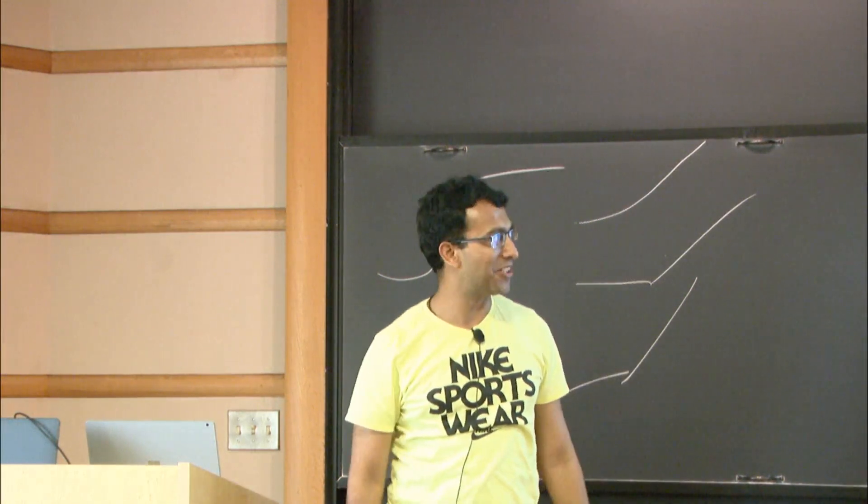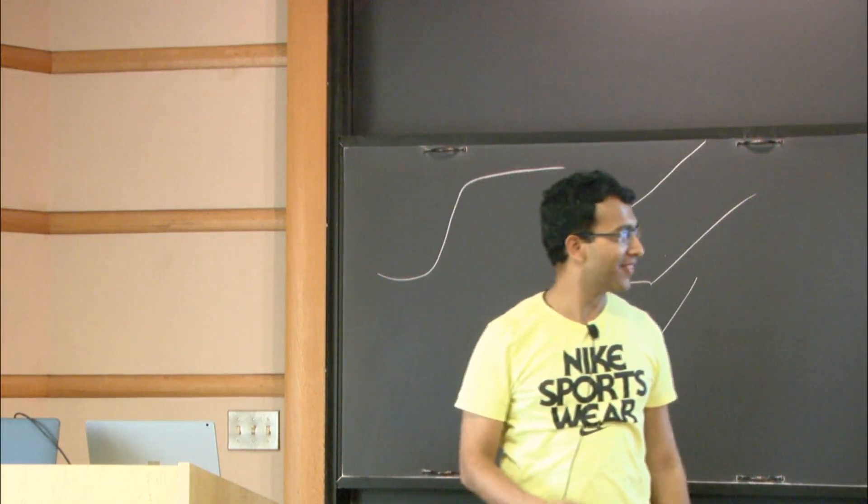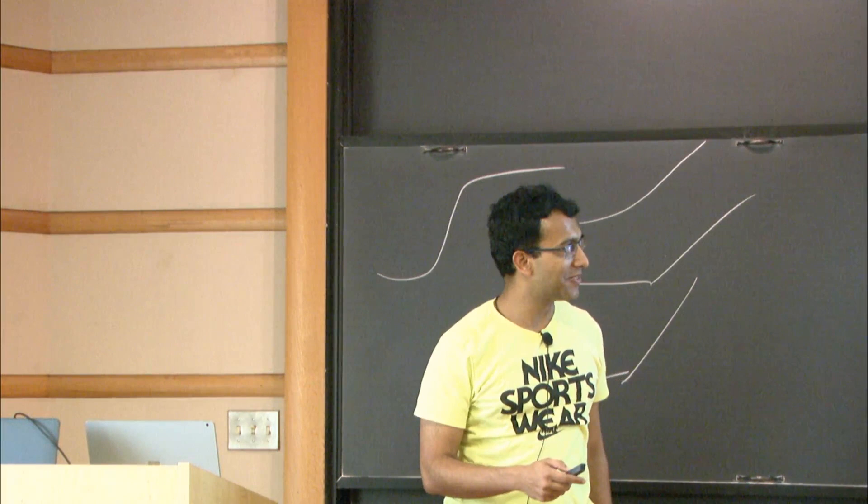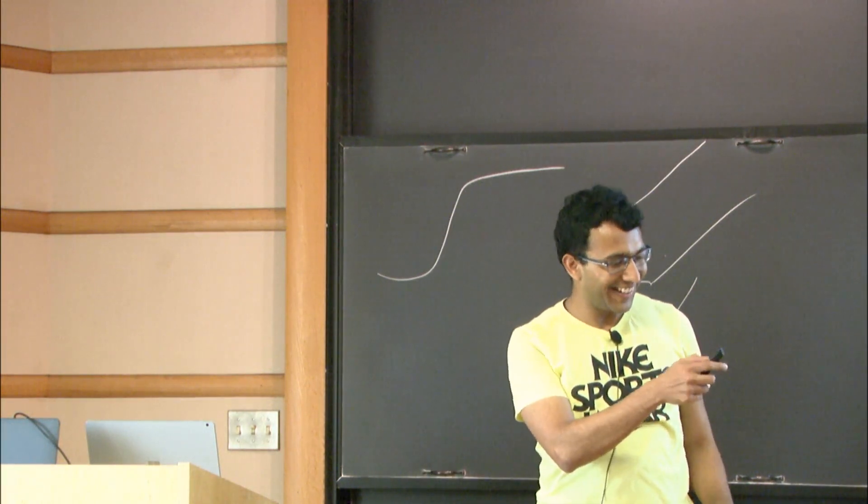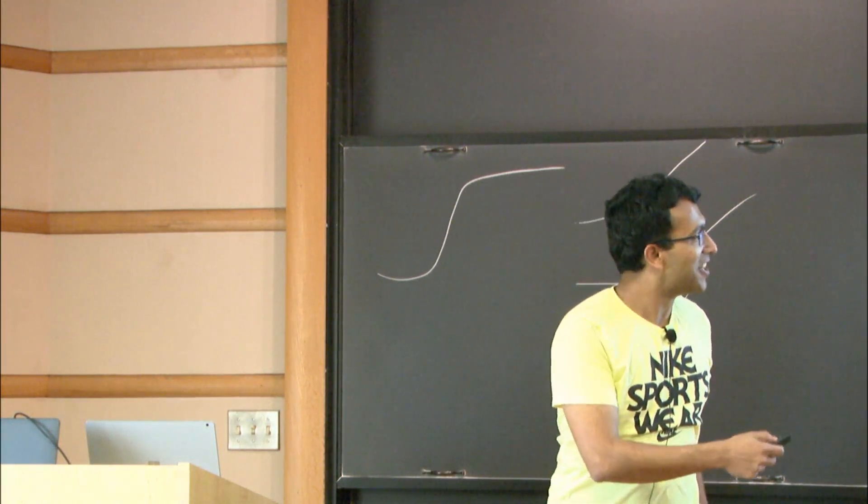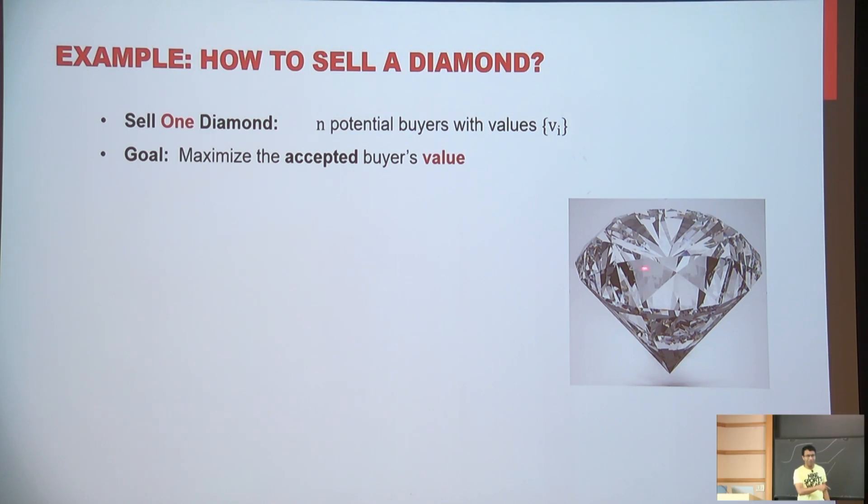Okay, so I'll be talking about some discrete optimization problems under uncertainty. Let's start off with an example. Suppose you own a very big diamond and you want to sell it out.